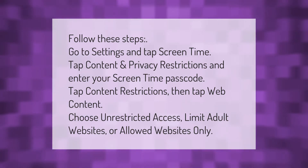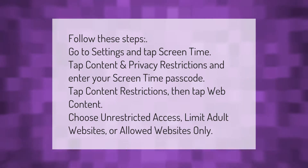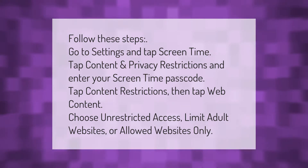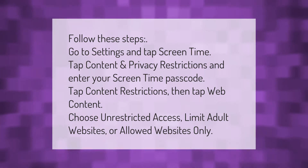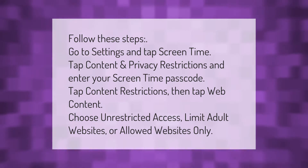Follow these steps: go to Settings and tap Screen Time. Tap Content and Privacy Restrictions and enter your Screen Time passcode. Tap Content Restrictions, then tap Web Content. Choose Unrestricted Access, Limit Adult Websites, or Allowed Websites Only.